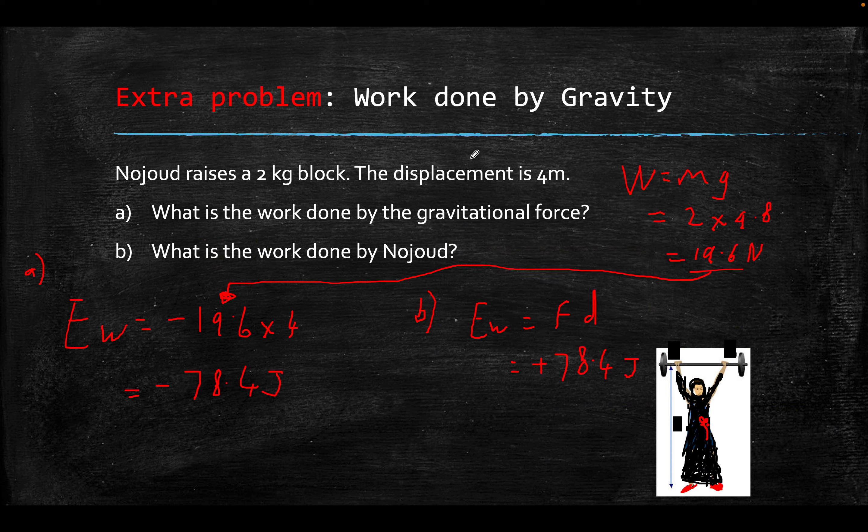So here was an example. Nojirud raises a 2 kilogram box. The displacement is 4. What is the work done by the gravitational force? So W equals MG. Why? Well, because this is mass. Mass is not good. So I can just do W equals MG and turn it into a force. Because work done is force times distance. I calculate weight, which is a force. 2 times actually negative 9.8 will give me minus 19.6. So work done will be minus 19.6 times 4, minus 78.4. So this is the F times the D.